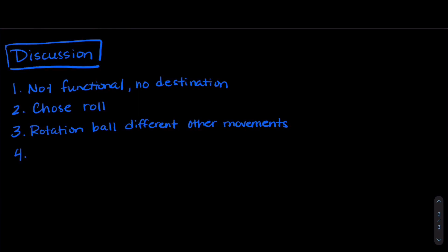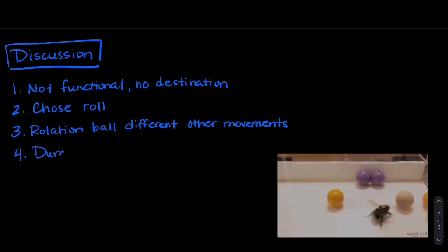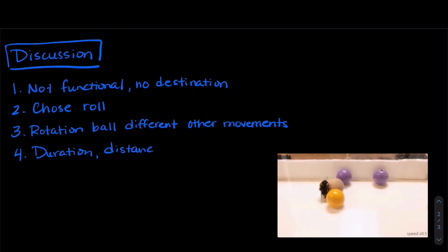The fourth rule of play. What the researchers saw was that the duration, the distance, and the route that the bees took with the balls were varied. There was no plan. So they have this kind of creativity with rolling the balls.